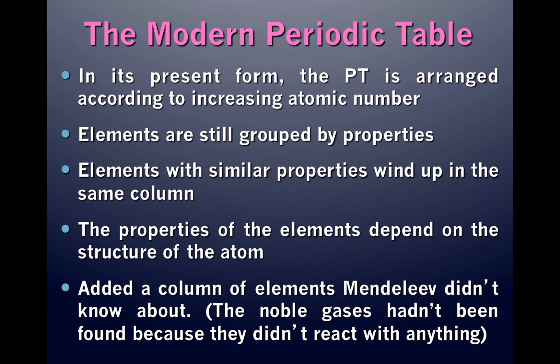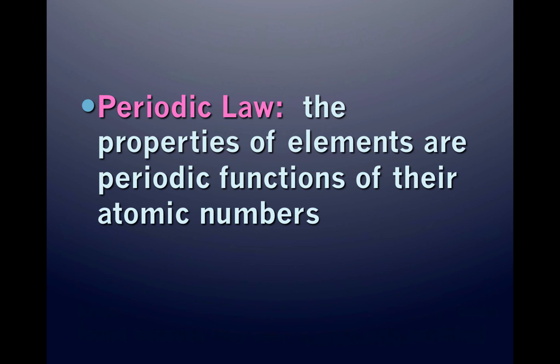The modern periodic table contains an additional column of elements that Mendeleev didn't know about — these are the noble gases. They had not been discovered yet because they did not react with anything. The periodic law states that the properties of elements are periodic functions of their atomic numbers.